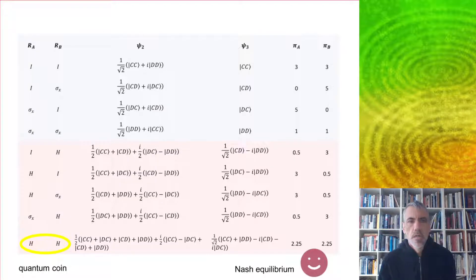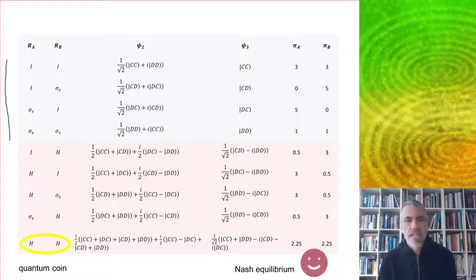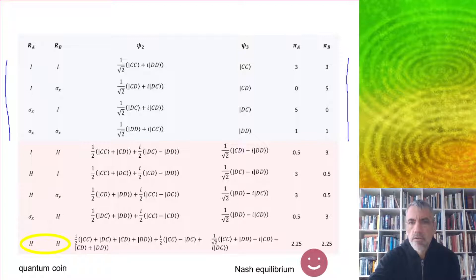When you do a table of all the different possibilities, the top four results here are for the classical versions of the game, where the moves are only identity or the NOT gate which flips from cooperate to defect, and we get the usual outcomes over there for the two players.